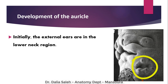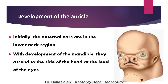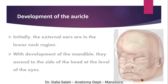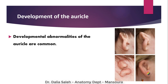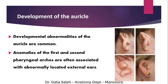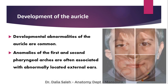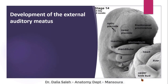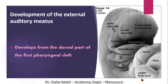Initially, the ears are seated low in the neck region, but with further development of the head, neck, and mandible, they ascend to the sides of the head at the level of the eyes. Because the development of the auricle is very complicated, it is common to have abnormalities of the auricular region. The anomalies of the auricle are often associated with anomalies of the first and second pharyngeal arches, as seen in this diagram. The first pharyngeal cleft is the space or groove between the first and second pharyngeal arches.